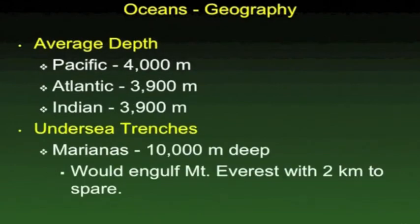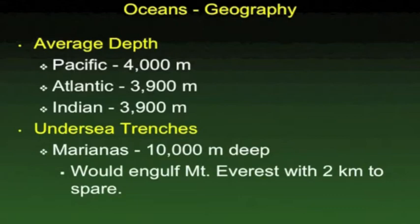The average depth of the oceans is very similar, around 4,000 meters, but the deepest section is in the Pacific — the Marianas Trench — at 10,000 meters deep. As shown here, it would engulf Mount Everest. This is located west of Indonesia, a bit south of Japan, in the bottom of the Pacific Ocean.